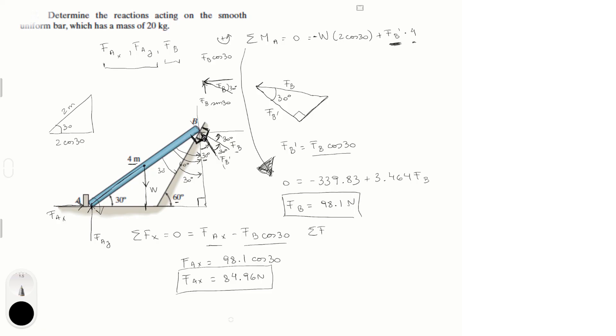And the last one is sum of the forces in the y is equal to 0, which is equal to f_Ay which is the one we gotta find minus the weight, don't forget the weight, plus the y component of f_B which is f_B sine of 30. Now that means that f_Ay is equal to the weight minus f_B sine of 30. F_Ay when you plug in the weight which is 9.81 times 20, so 9.81 times 20 minus f_B which is 98.1 times sine of 30 should give you 147.15 Newtons.